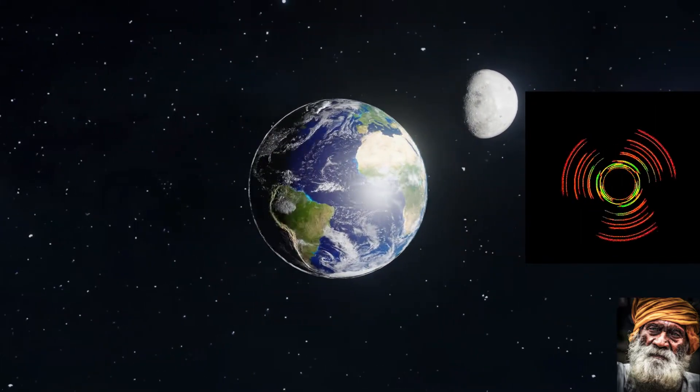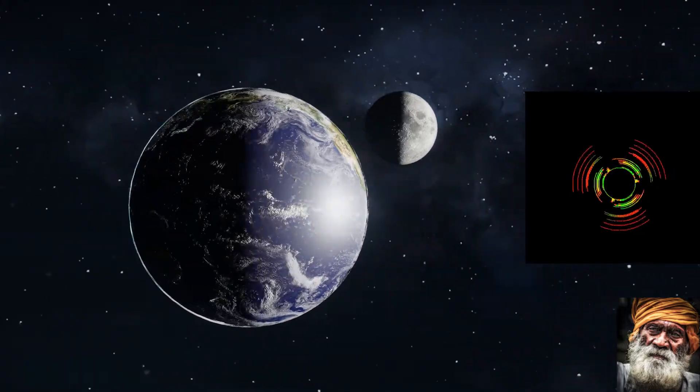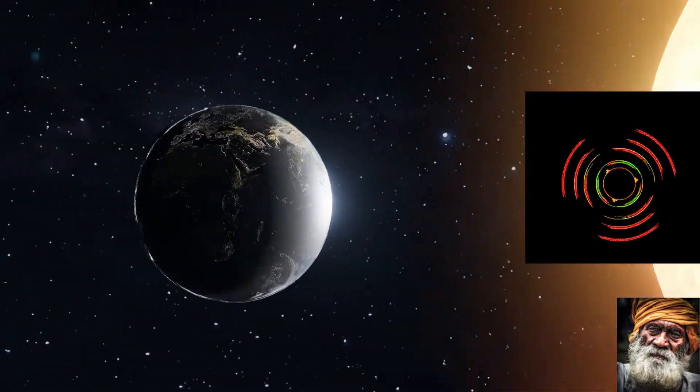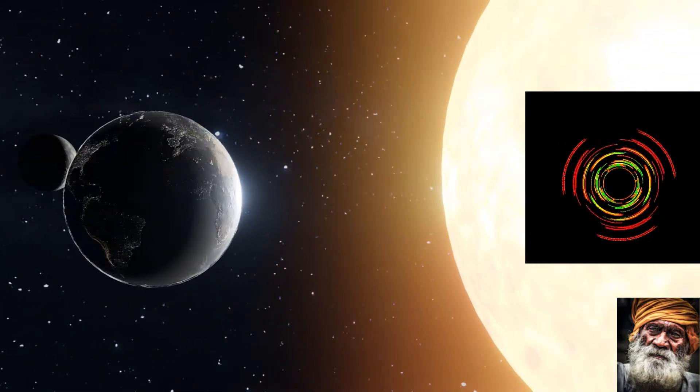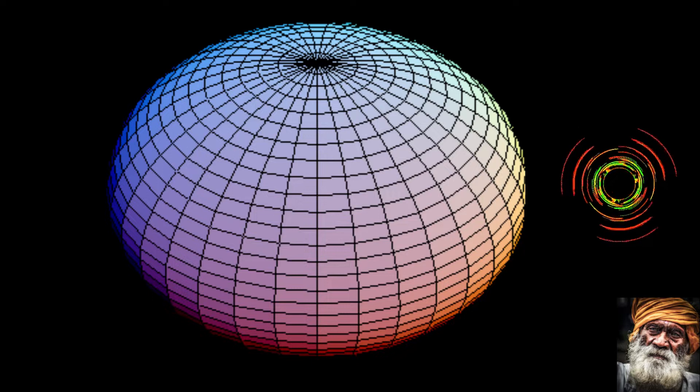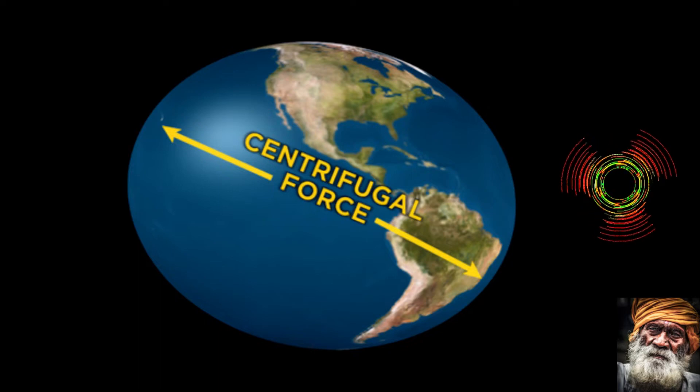Picture this: you are floating in space gazing down at our blue planet. It looks perfectly round, doesn't it? But hold on, our Earth is not a perfect sphere. It is an oblate spheroid, which means it's slightly squashed at the poles and bulging at the equator. Imagine spinning a water balloon - the faster it spins, the more it bulges in the middle due to centrifugal force.